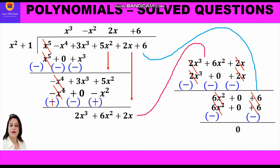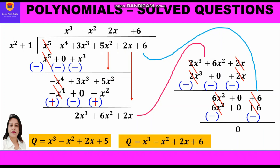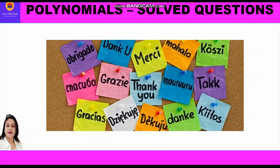We can verify by dividing the new dividend by x² + 1, which gives remainder 0. The quotient has also updated from x³ - x² + 2x + 5 to x³ - x² + 2x + 6. Hope you have enjoyed the video and learned how to find what must be added to a dividend so that the sum is exactly divisible by the divisor. Please like, subscribe, and share your feedback in the comments. Thank you, students.